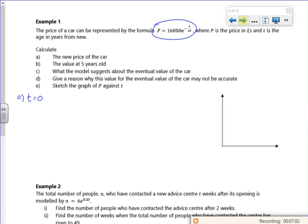The new price is when t is zero, so P would be 16000. E to the power of zero is one, so I bought the car for 16 grand, a brand new car for 16 grand. That's not bad.